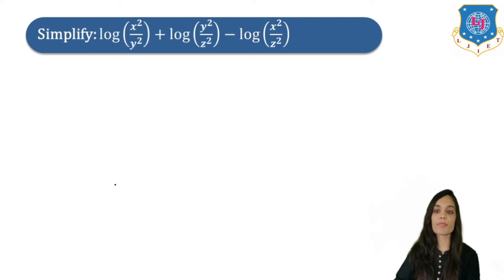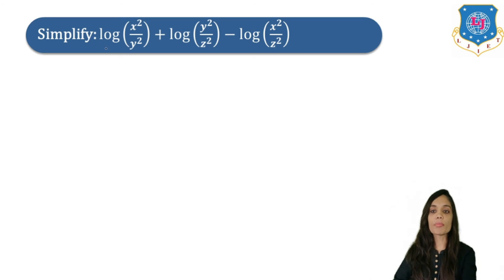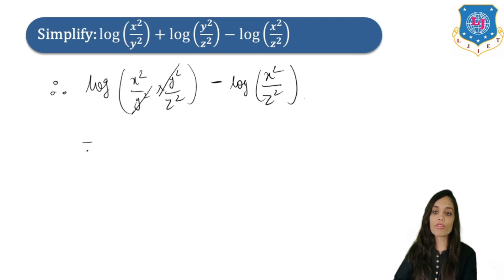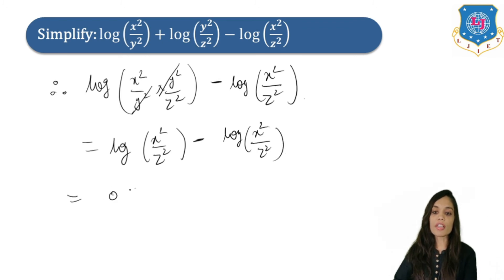Next example: log (x²/y²) plus log (y²/z²) minus log (x²/z²). If the base is not given, we consider base 10. Applying the product rule to the first two terms, we multiply to get log (x²/z²). Then subtracting log (x²/z²) gives log (x²/z²) minus log (x²/z²), which equals 0.